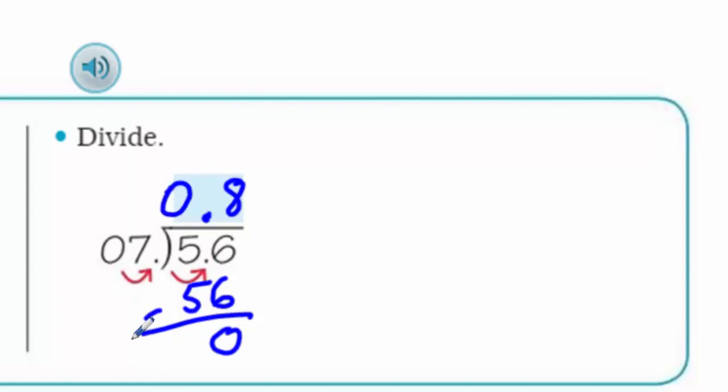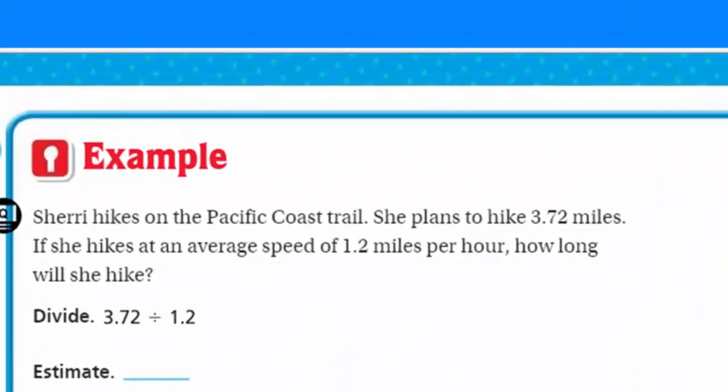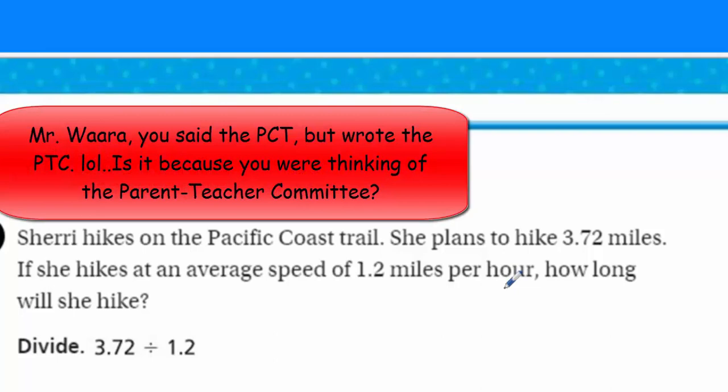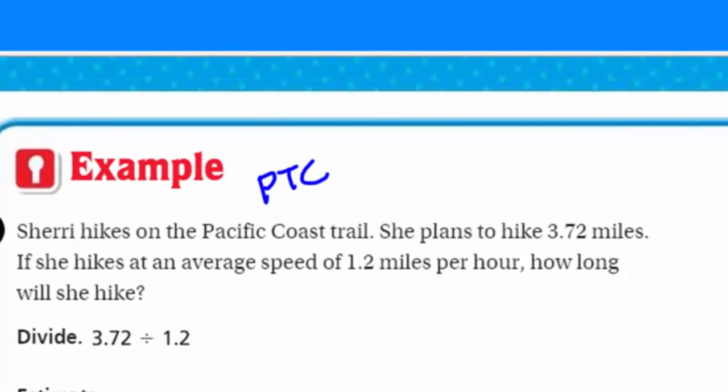Hey, hey. It's Page Master. Well, thank you, Page Master. You do such a great job. Now, Sherry hikes on the Pacific Coast Trail. Oh, the PCT. Yeah, I know about the PCT, my friends. Anyway, she plans to hike 3 and 72 hundredths miles. If she hikes at an average speed of 1 and 2 tenths miles per hour, how long will she hike?